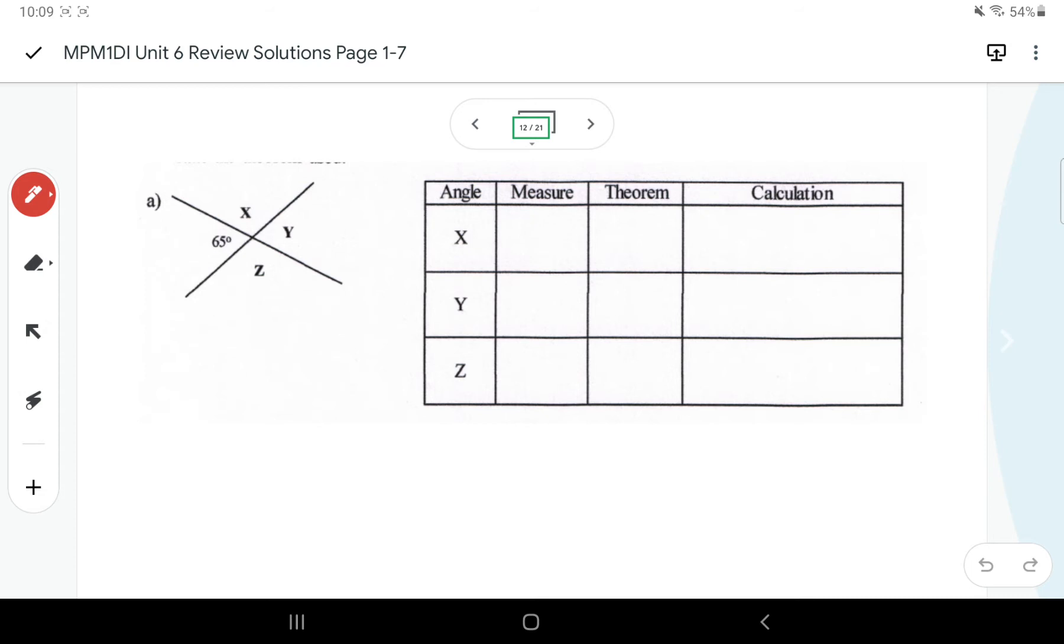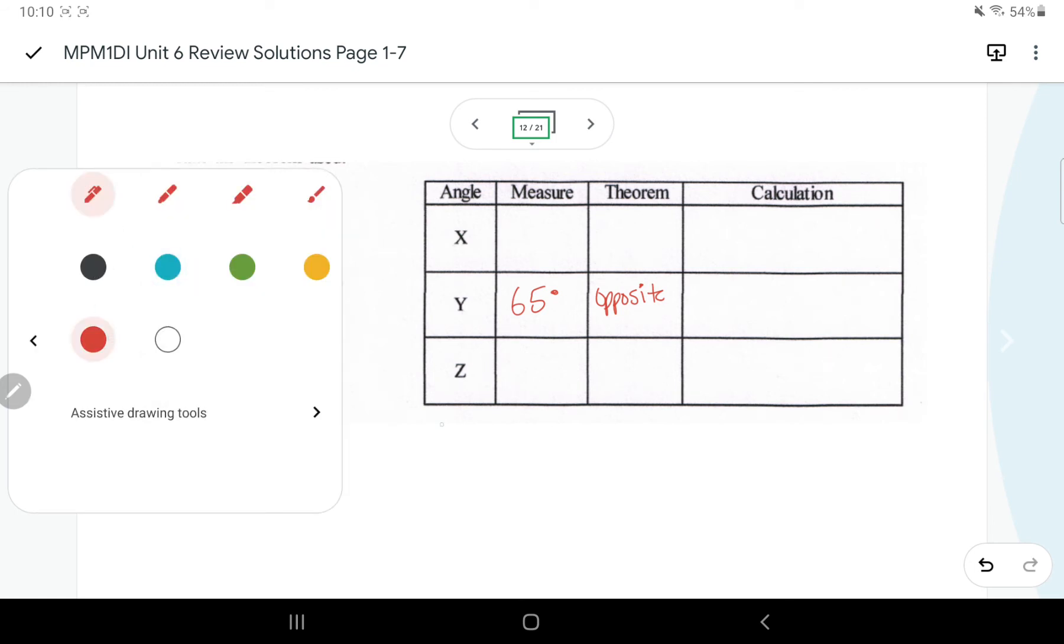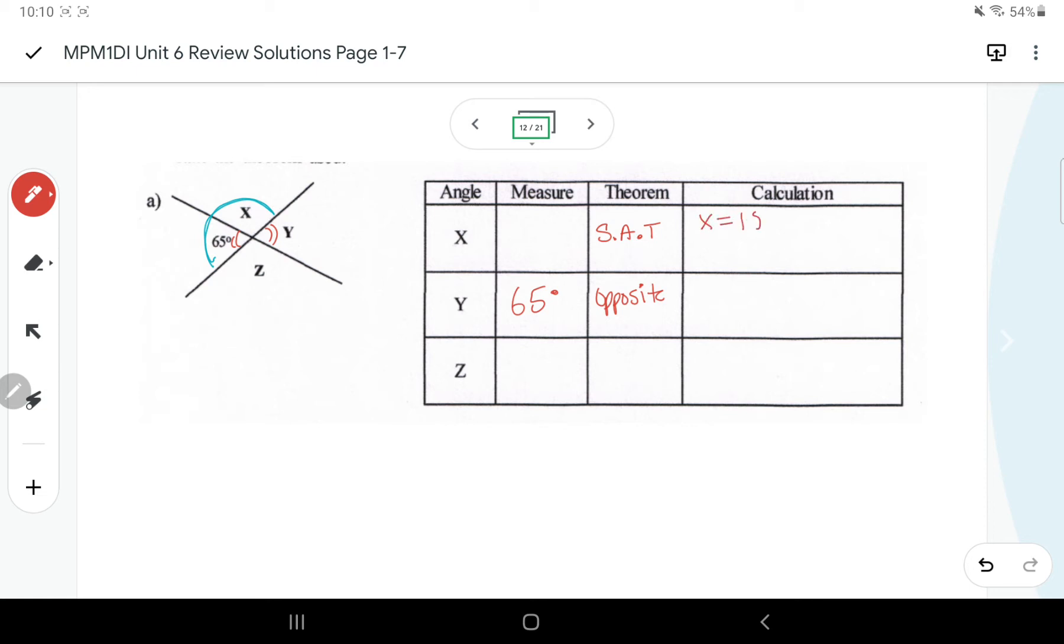Here we have a bunch of opposite angles. We've got our Y is directly opposite to the 65, so I could immediately say that Y is 65 because it's opposite. And then X we could see is supplementary with either the 65 that's drawn in there or the Y. They both form a straight line, so that's a supplementary angle theorem and X would be 180 minus 65, which is 115. And then Z is going to be opposite to X, so it's also 115.